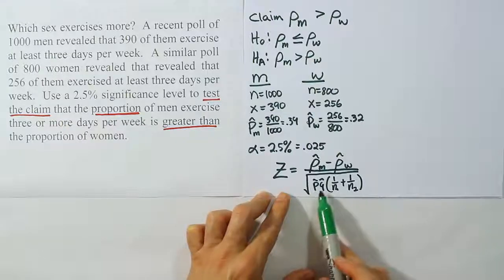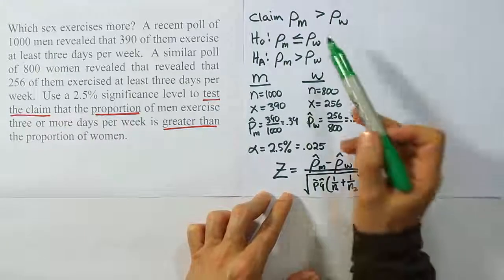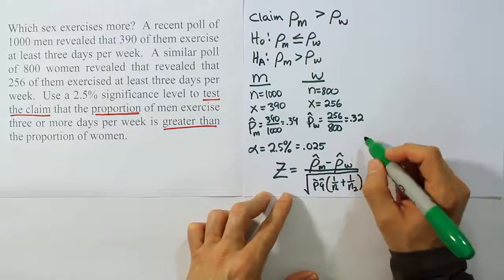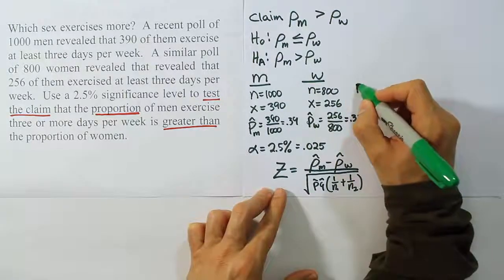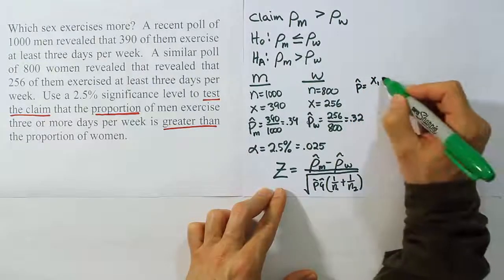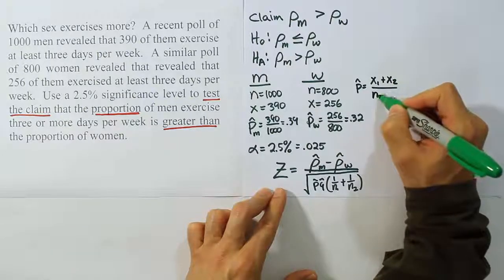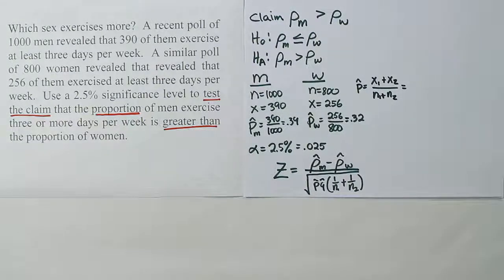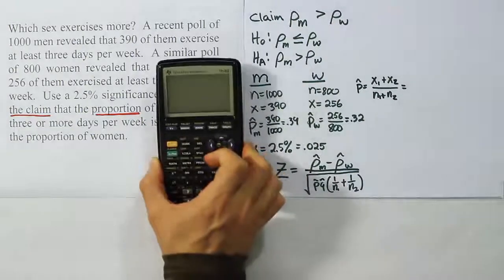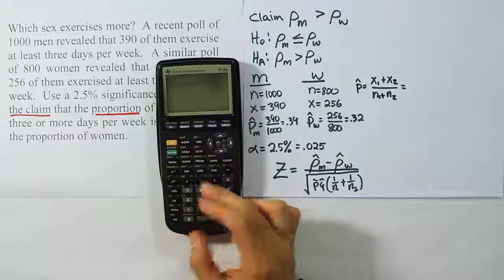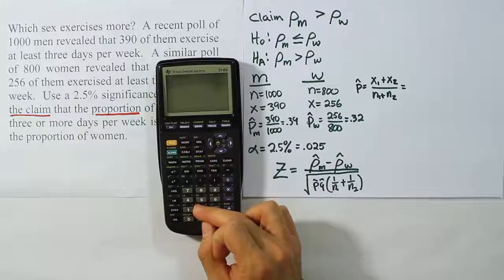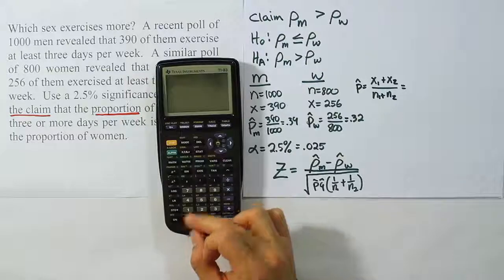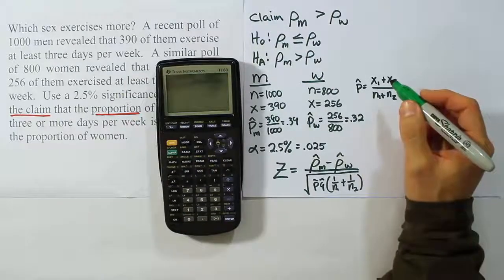The p-hat and q-hat in the denominator are actually the pooled estimators, because we assume the two proportions are equal under H0. To calculate the pooled p-hat, we add the x values together and divide by the sum of the N values: (390 + 256) divided by 1,800. That gives us 0.3588 repeating.